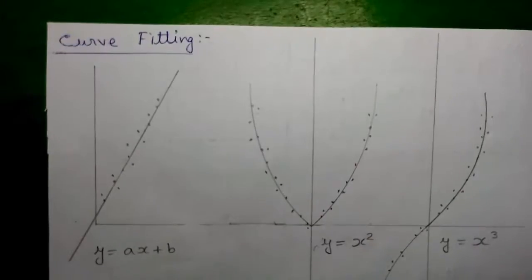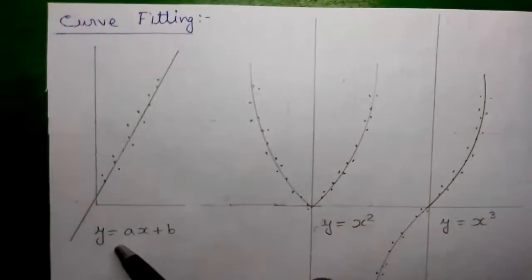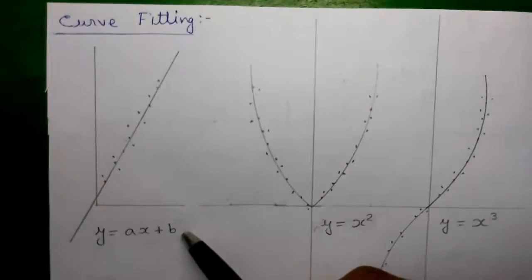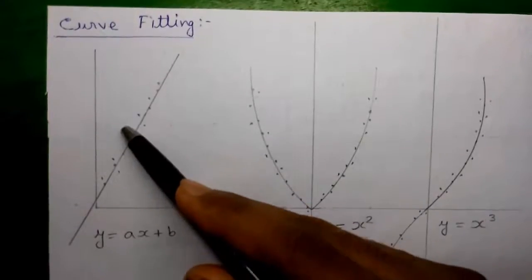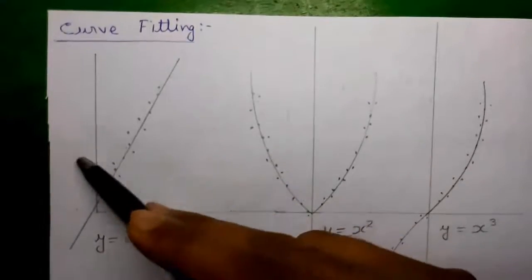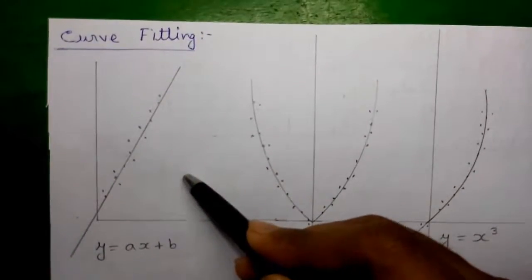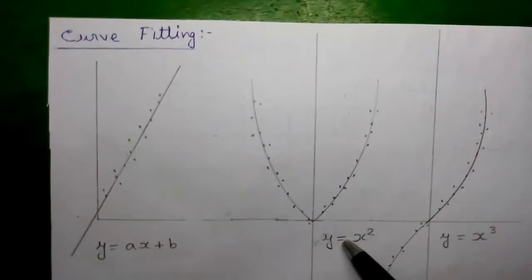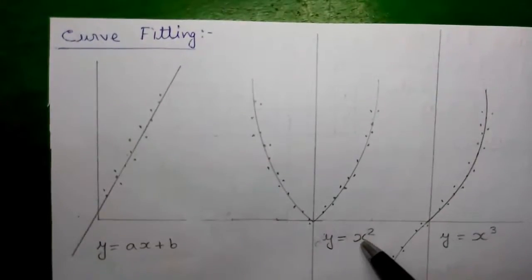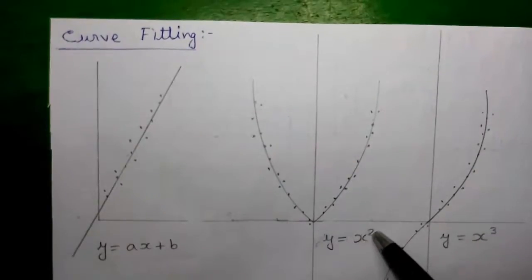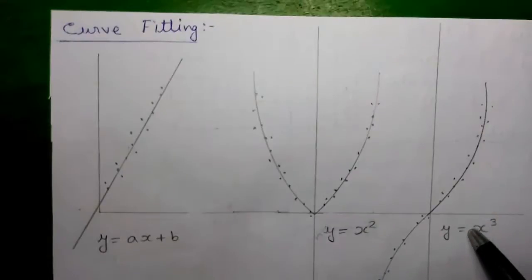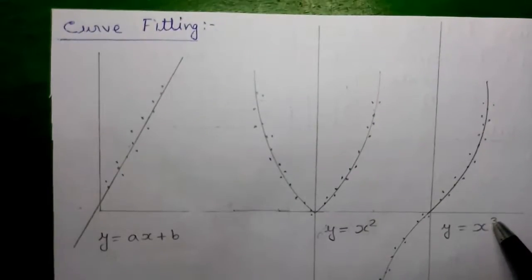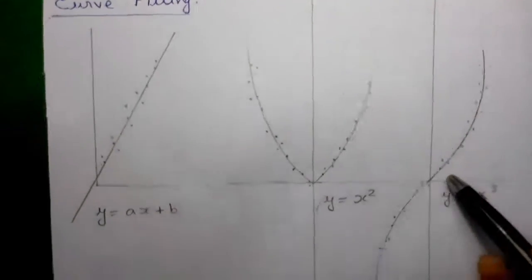Curves are of different types. This one is a straight line for Y equals AX plus B, and as you can see, all the points are not touching the line — they are scattered around the line. That's why this picture is called a scatter plot. Next is another graph, Y equals X squared — this is an exponential graph. If X is raised to an even power, you get a U-shaped curve. And this is another exponential graph where X is raised to an odd power, giving a different shape.